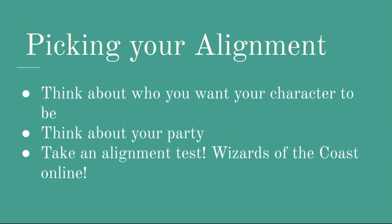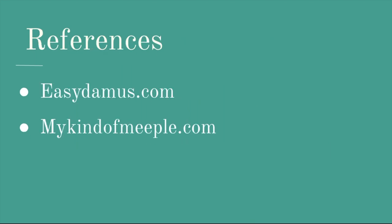So, picking your alignment. How do you pick your alignment? First, think about who you want your character to be and think about your party. How do you want your character to fit in the party? Do you want them to be a team player heavily involved with the group, or do you want them to operate on their own because it's beneficial to them? You can also take an alignment test — Wizards of the Coast has a great alignment test online. For references, I used easydamas.com and mykindofmeeple.com. These sites are great resources for explaining alignments and have further articles on each alignment. Thank you so much.